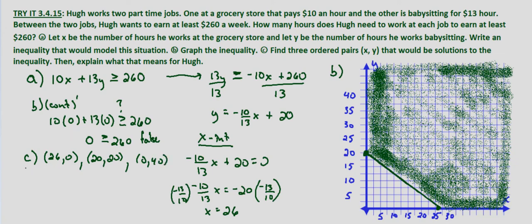Now what this means, with this first one, if he works 26 hours at the grocery store and 0 hours babysitting, he's still going to make greater than or equal to $260. In fact, in that case it would be exactly $260 because it's on the line. The same thing with (20, 20). If he works 20 hours at the store and 20 hours babysitting, he'll make more than $260. And if he works 0 hours at the store and 40 hours babysitting, he'll make greater than or equal to $260.